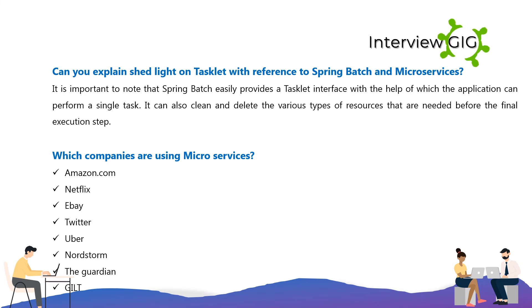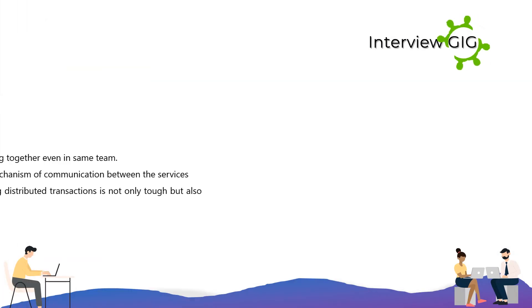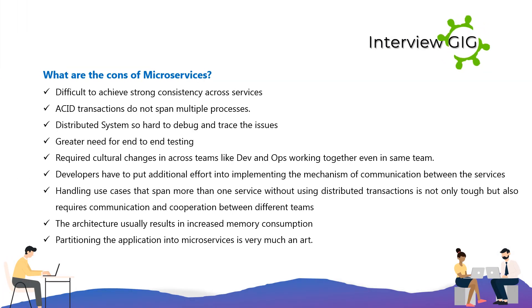Which companies are using microservices? Amazon, Netflix, eBay, Twitter, Uber, Nordstrom, and The Guardian.